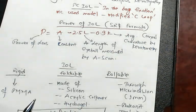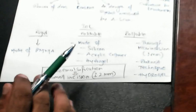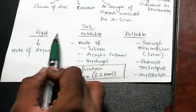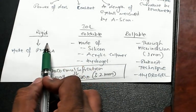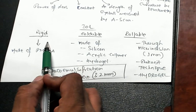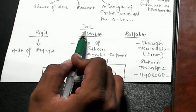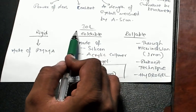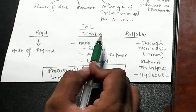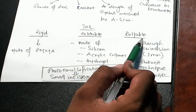What are the types of IOL? Rigid IOL, foldable IOL, rollable IOL.